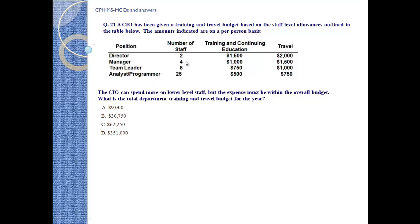Director: number of staff 2, training and continuing education budget $1,500, travel $2,000. Manager: number of managers 4, training and continuing education $1,000, travel $1,500. Team leader: number of staff 8, training and continuing education $750, travel $1,000. Analyst/programmer: number of staff 25, training and continuing education $500, travel $750.